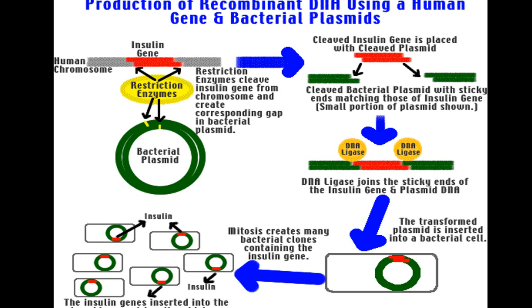In the next step, this bacteria is put onto a medium and starts dividing — it is growing. Mitosis creates many bacterial clones containing the hybrid DNA which carries the insulin gene. When the bacteria divide, first one becomes two, two becomes four, four becomes eight — likewise the bacteria are growing by mitosis.